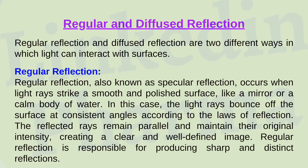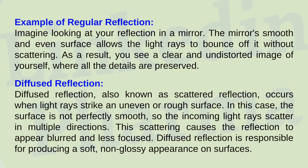Regular and Diffused Reflection: regular reflection, also known as specular reflection, occurs when light rays strike a smooth and polished surface, like a mirror or a calm body of water. The light rays bounce off at consistent angles according to the laws of reflection. The reflected rays remain parallel and maintain their original intensity, creating a clear and well-defined image. Example: looking at your reflection in a mirror — the mirror's smooth surface allows light to bounce off without scattering, so you see a clear and undistorted image where all details are preserved.